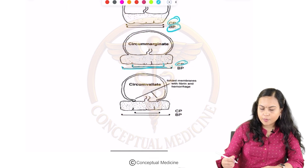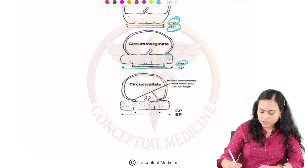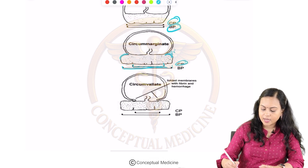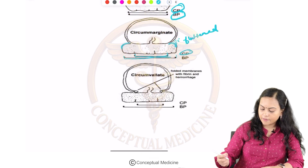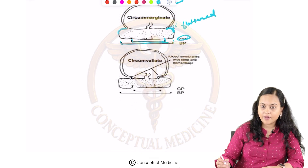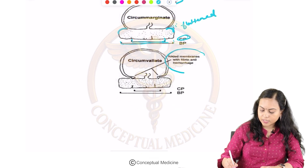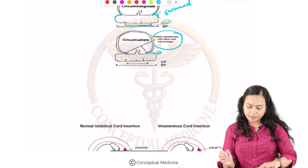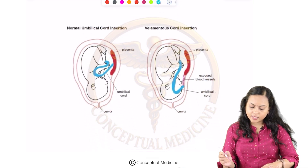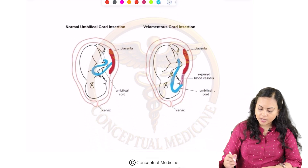In circummarginata presentation, the transition is smooth — only fibrin deposition is there and there is a flattened peripheral edge. Whereas in circumvallate placenta, there are folded membranes with fibrin and hemorrhage, and the membranes are folded.